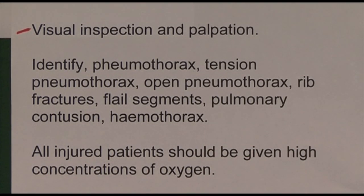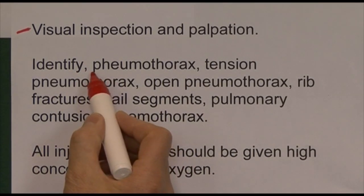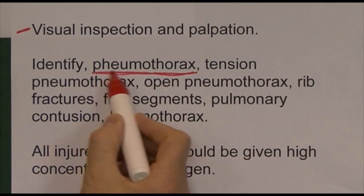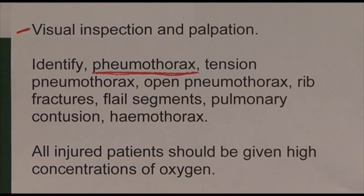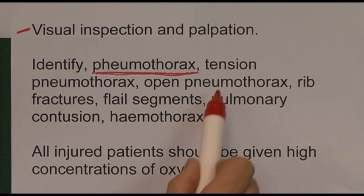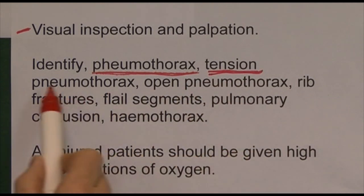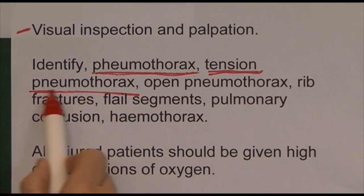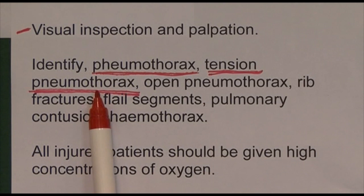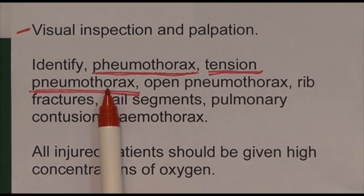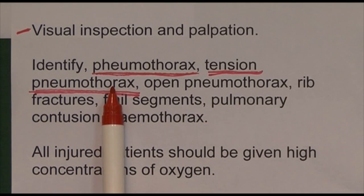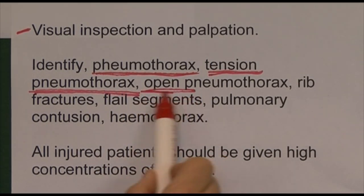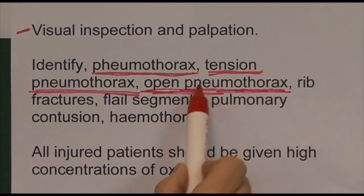Injuries that might compromise breathing include pneumothorax — air in the pleural cavity where the potential space becomes an actual space. If there's a flap of tissue allowing air in but not out, pressure builds and causes a tension pneumothorax, which is particularly dangerous as it compresses the heart and great vessels, shifting them to one side. An open pneumothorax can also be detected — these are called sucking chest wounds.